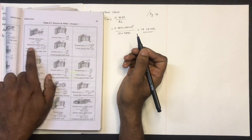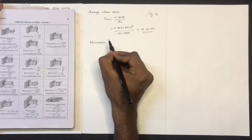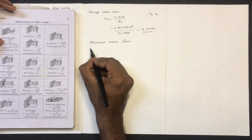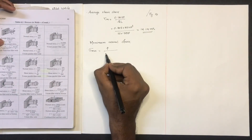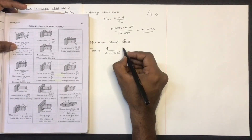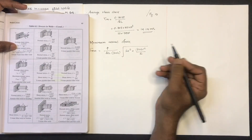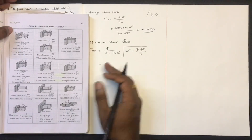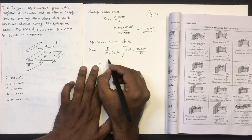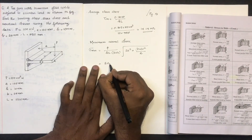The formula involves the term (B plus H) the whole into 2A squared, plus (B plus H) the whole squared divided by 2, which we use to find the average shear stress.